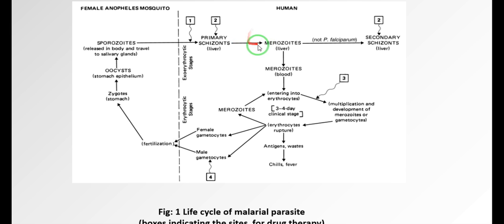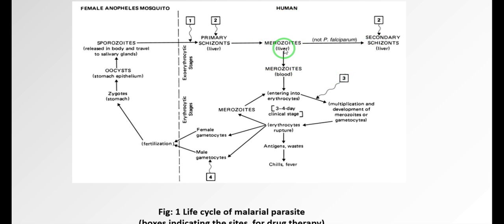In this phase, there are no clinical symptoms of malaria. When the primary schizonts convert into merozoites, depending upon the type of species, there will be a conversion into merozoites or they will convert into secondary schizonts. Three types will convert into secondary schizonts, but Plasmodium falciparum will not convert into secondary schizonts.